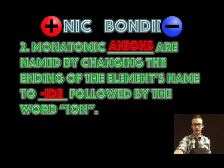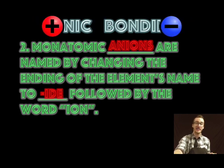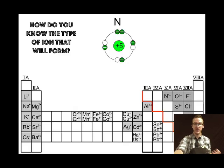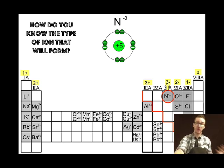Monatomic anions on the other hand are named by changing the ending of the element's name to IDE followed by the word ion. So let's take a look at the element nitrogen. A neutral atom of nitrogen has 5 valence electrons. Once again there's this nifty pattern that you can use to help you identify simply by looking at the periodic table but recognize that nitrogen is gonna gain 3 electrons to complete its valence level. Those 3 negative electrons are gonna give the nitrogen atom an overall charge of 3 minus and we call this the nitride ion.